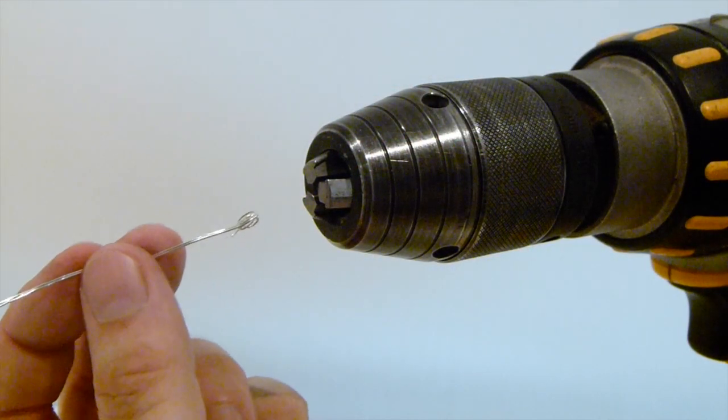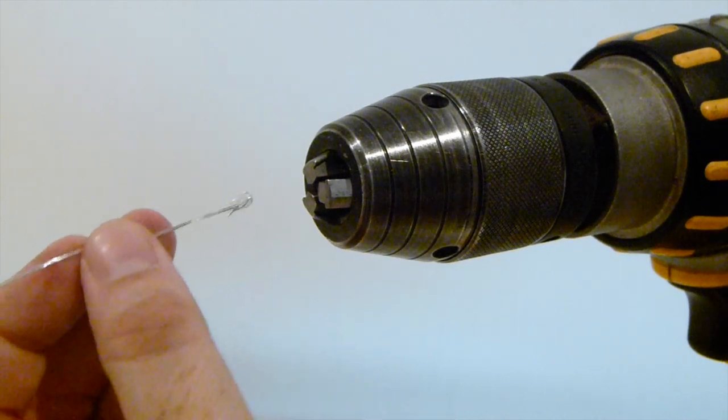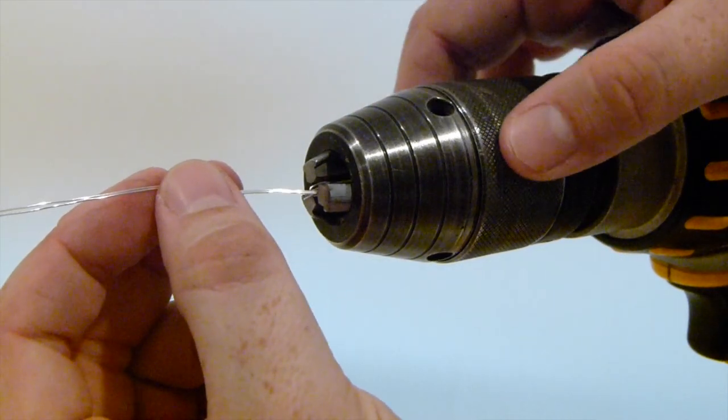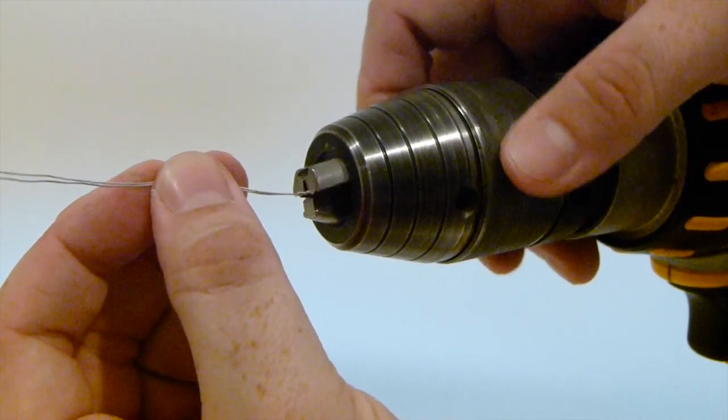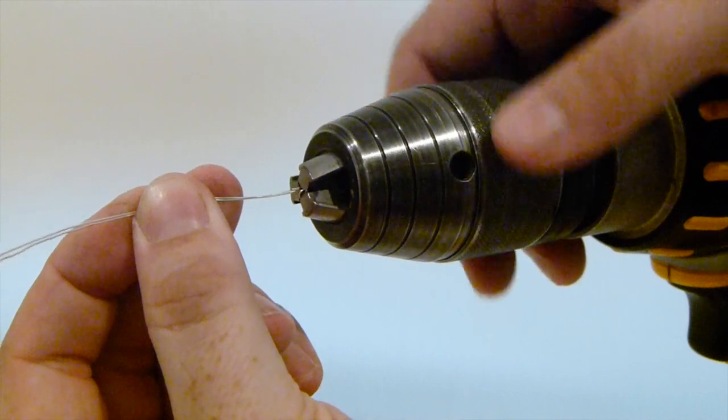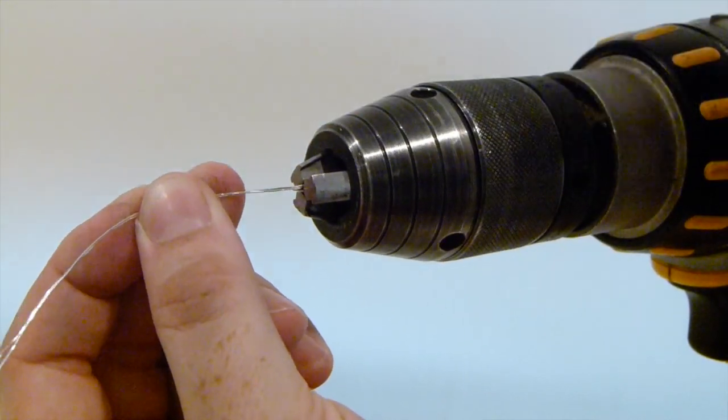So what you need to do is get that end that you just folded over and place it into your open drill. And then tighten that so it's nice and secure. Like so.